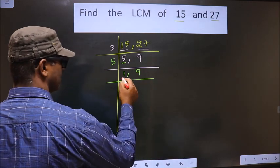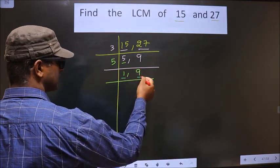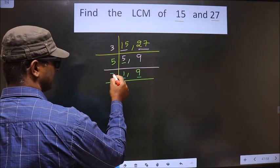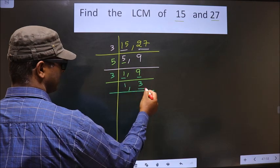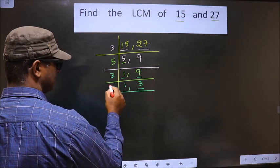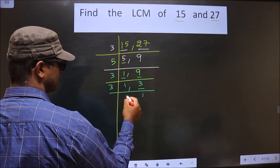Now here we got 1, so we focus on the next number, that is 9. 9 is nothing but 3 times 3. Now here we have 3. 3 is a prime number, so we take 3 once, giving us 3.